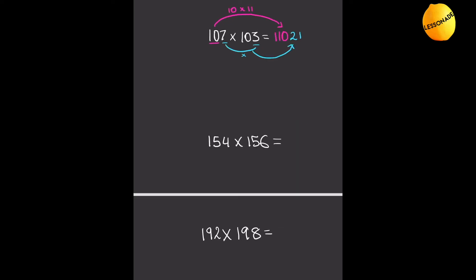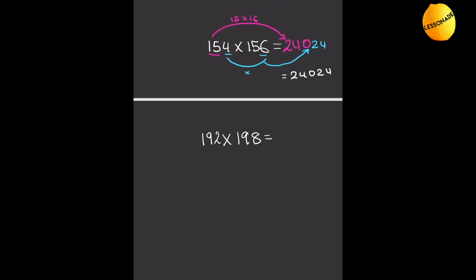Now for the next one, let's do this more quickly. We choose the hundreds and tens value, which is 15 in this case, and multiply it by its next highest number, which is 16. So 15 times 16 is 240. Then we do 4 times 6, which is 24, and put that 24 there. So the answer is 24024.